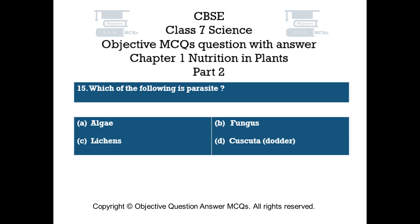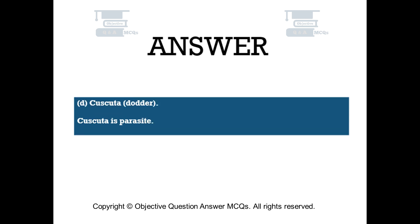Question number 15: Which of the following is a parasite? Option A: algae. Option B: fungus. Option C: lichens. Option D: Cuscuta (dodder). The right answer is option D — Cuscuta, dodder. Cuscuta is a parasite.